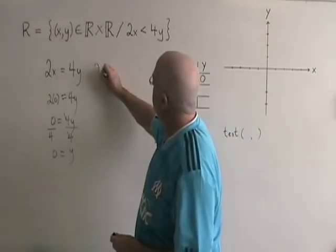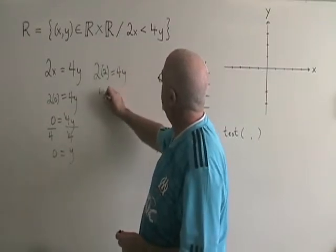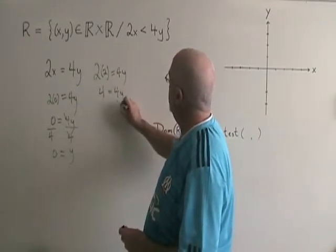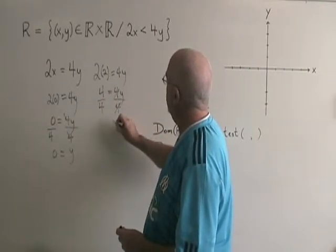If x is 2, 2 times 2 equals 4y. 4 equals 4y. Divide both sides by 4, and I get y equals 1.